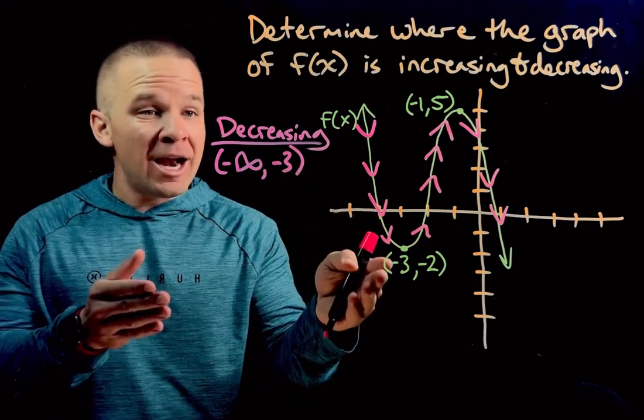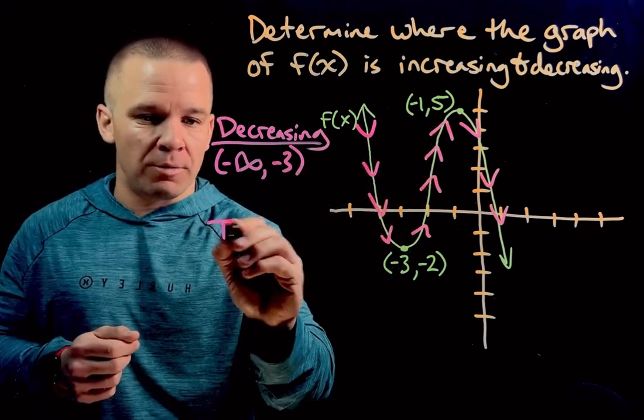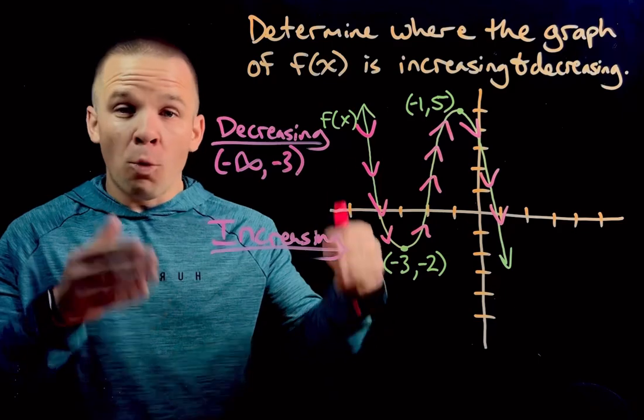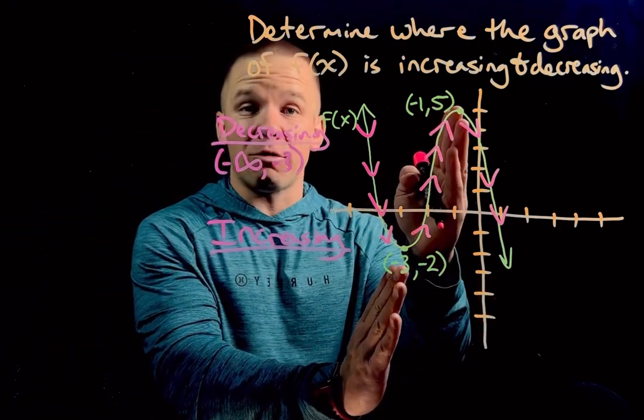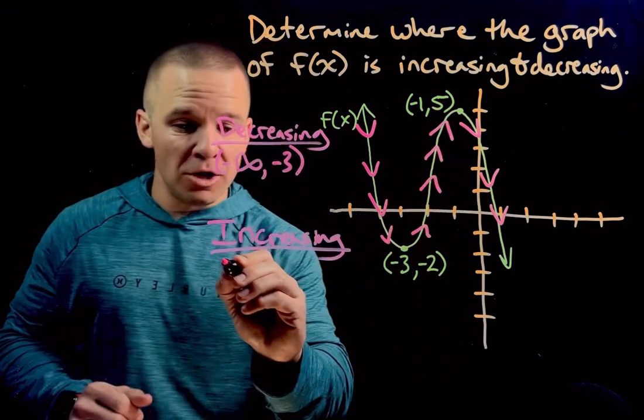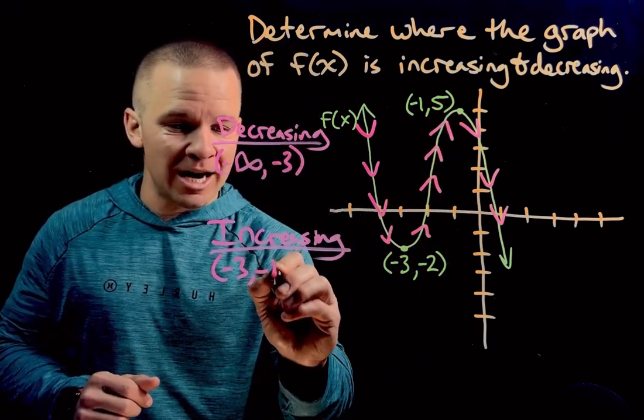Then I go into increasing mode. So we're going to put increasing. Where is that occurring on this graph? Between negative 3 and negative 1 the graph is increasing. So from negative 3 to negative 1.